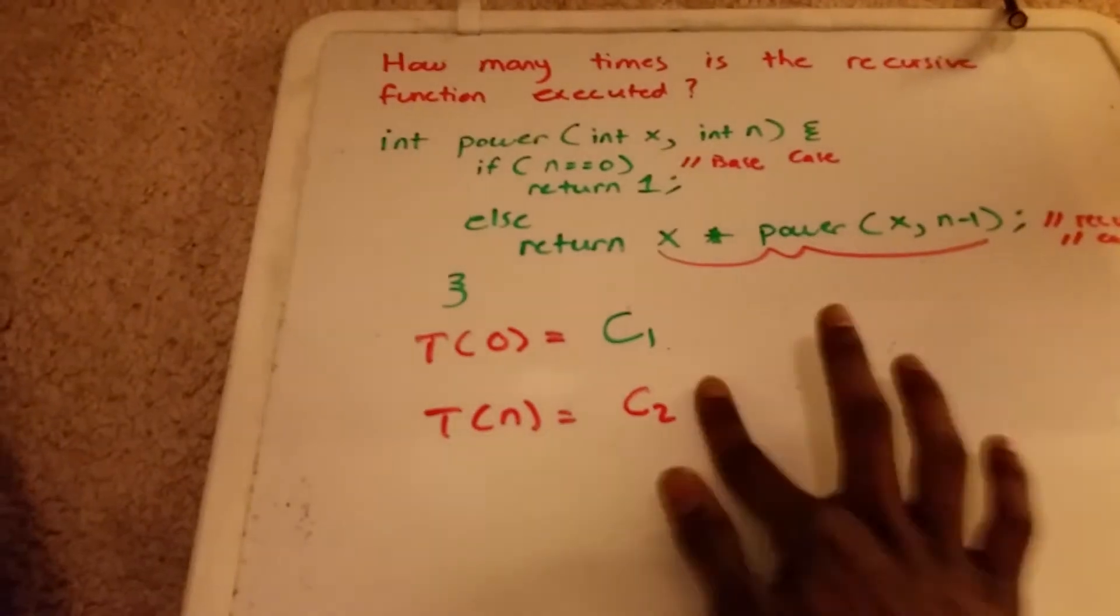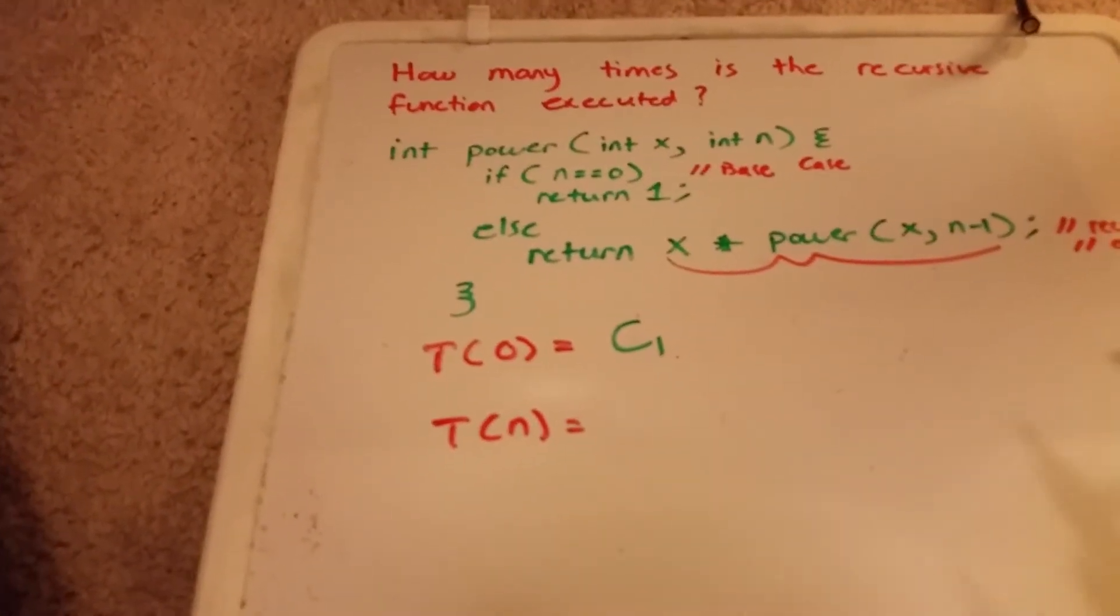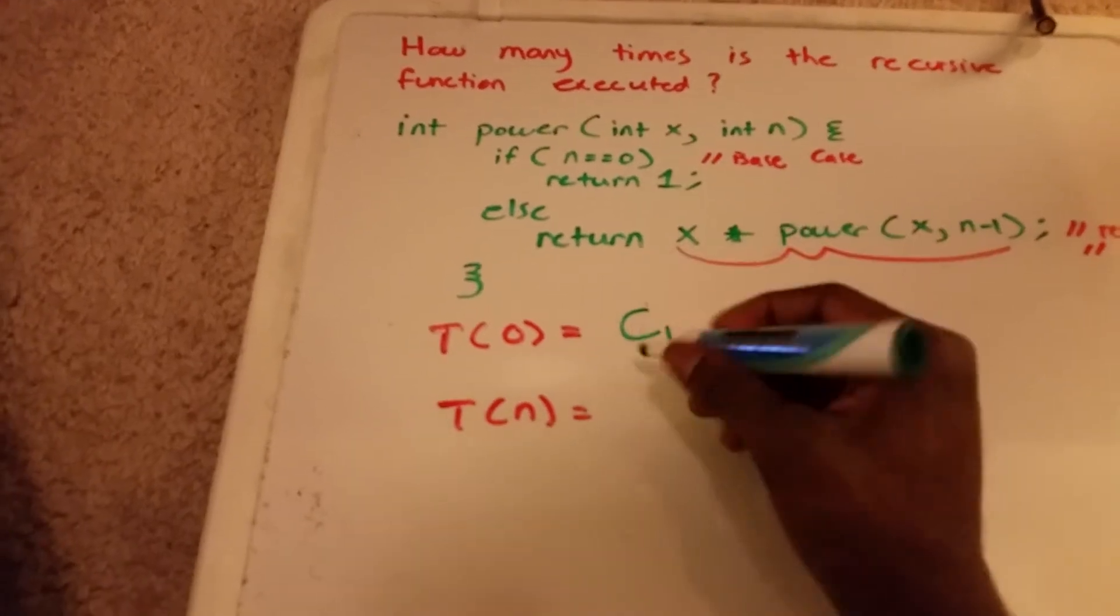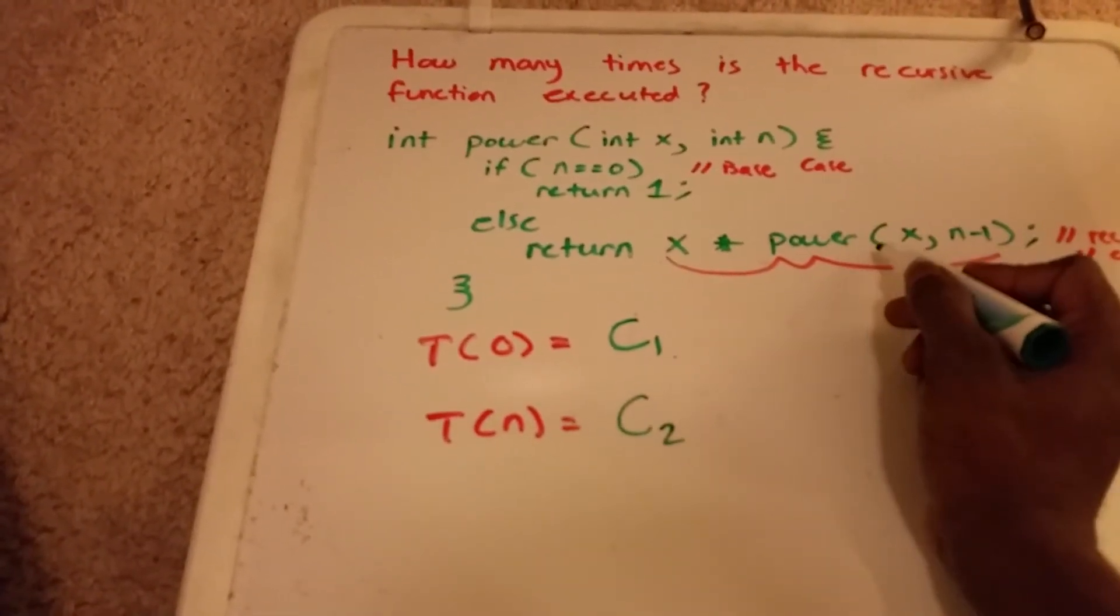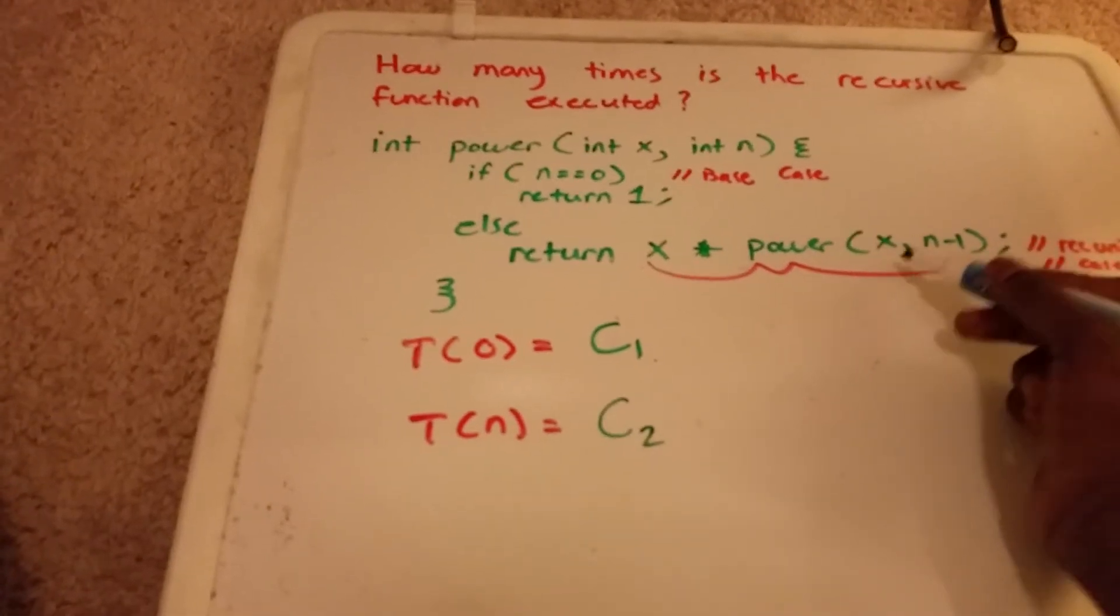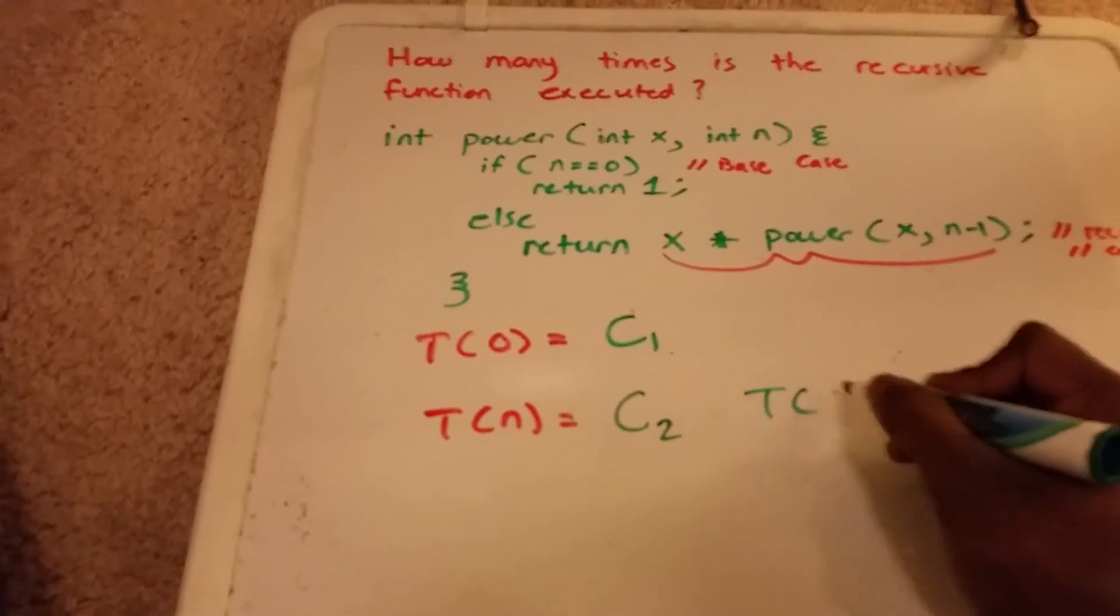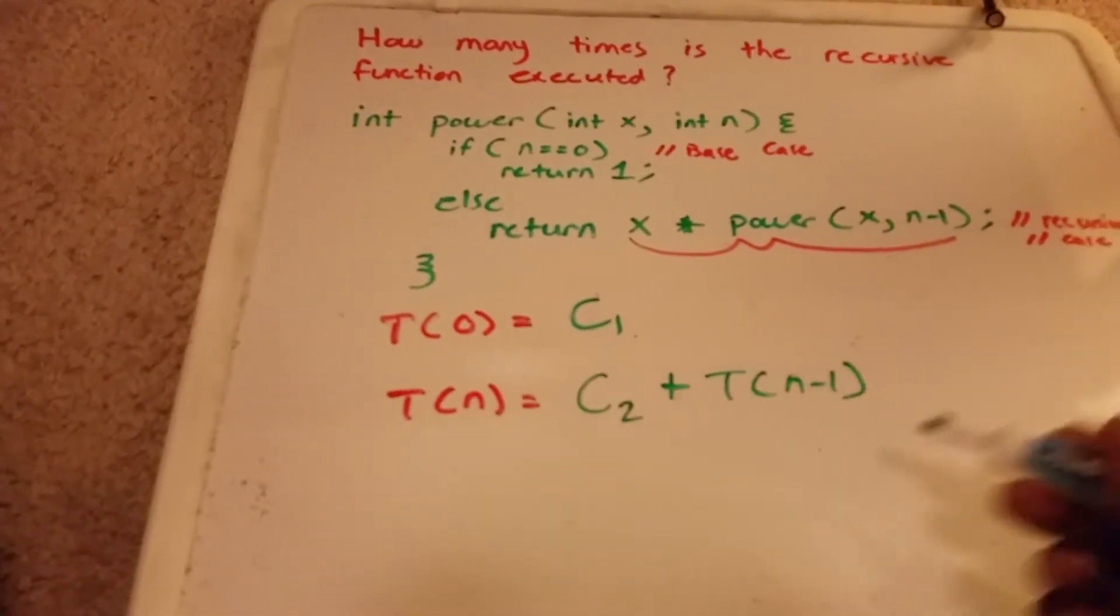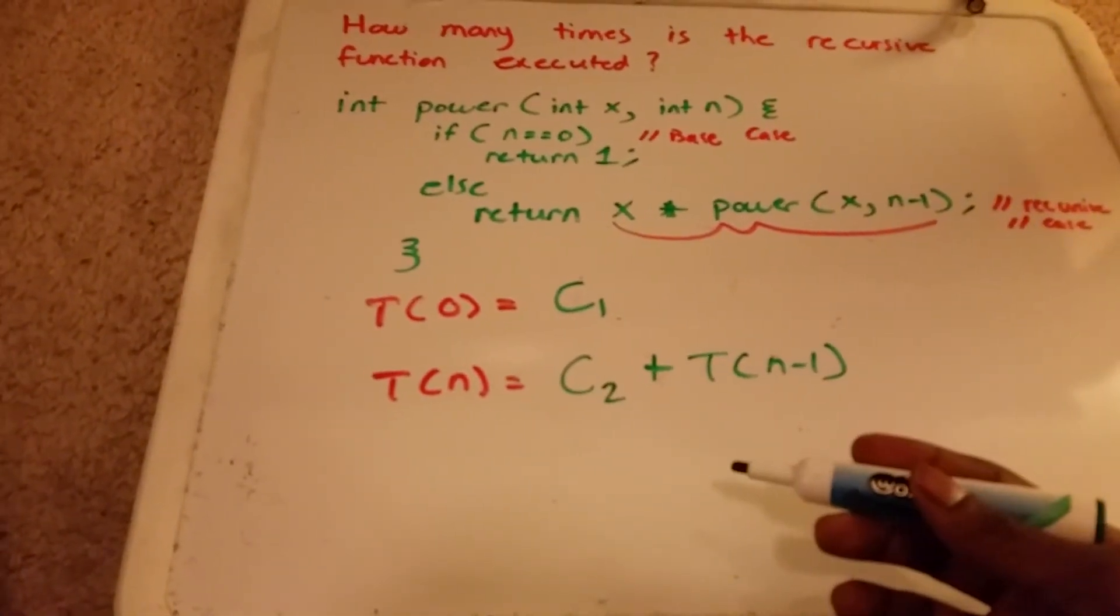Actually, I'll rewrite that. So I'm going to say it again. The time to solve x takes a constant amount of time. And the time to solve power of x, n minus 1, takes T(n-1) time. And we need to add these two times together. And that gives us our recurrence relation.